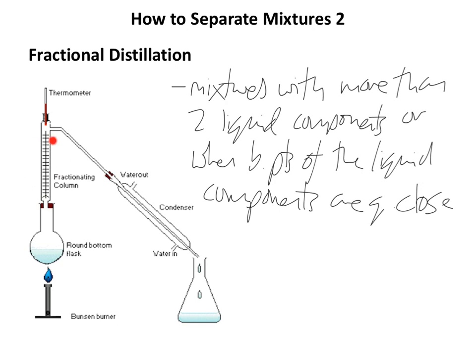Now, if we didn't have this fractionating column, and the boiling points of two components are very similar — say, a liquid with a boiling point of 80 degrees and a liquid with a boiling point of 85 — they're both going to evaporate at very similar temperatures. Both will hit the thermometer at around the same temperature, giving a reading between 80 and 85, and both will move down the condenser, turn from a gas into a liquid, condense, and drip off. So we'd actually end up with a mixture of liquids in our distillate.